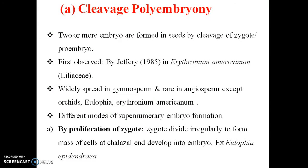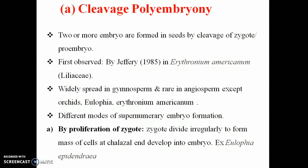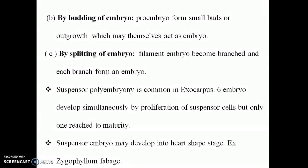In cleavage polyembryony, two embryos are created from cells by the cleavage of the pro-embryo. Examples include Erythronium americanum. Different modes of embryo formation exist. First, by proliferation of the zygote — the zygote is divided to form a mass of cells, each capable of developing into an embryo. An example is Philophea.